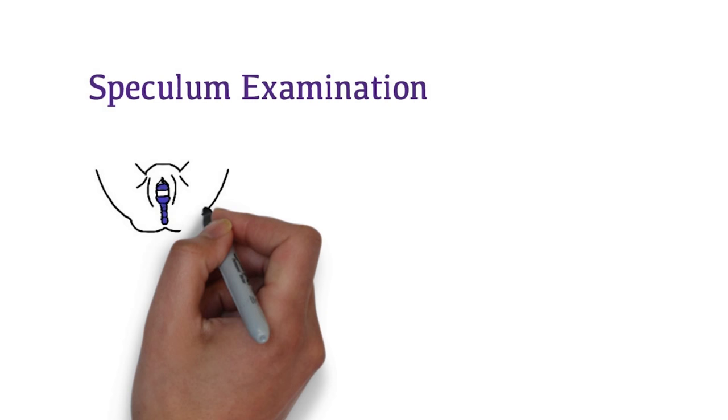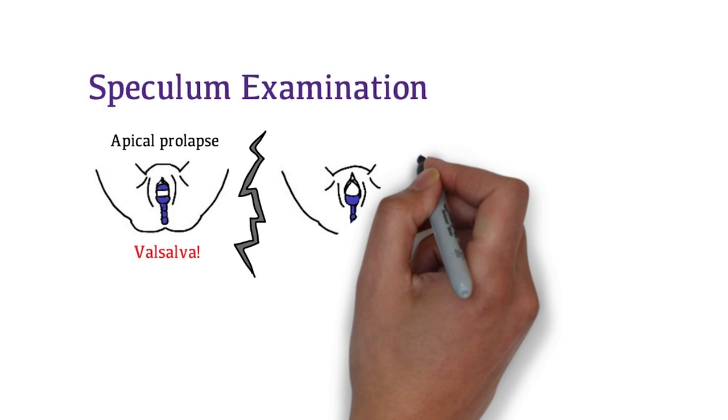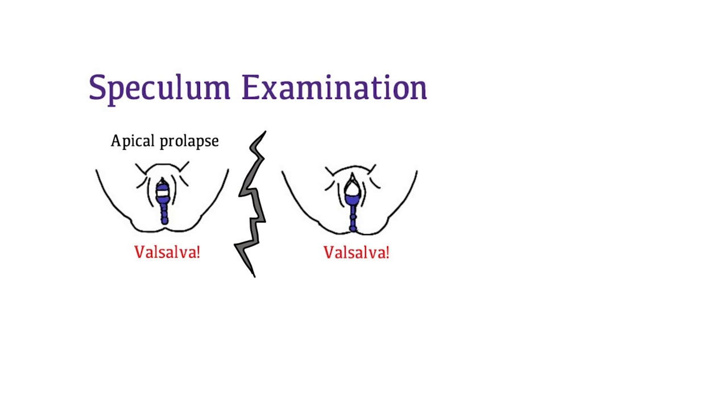We will continue with the speculum examination. Place the speculum into the vagina and ask the patient to strain. Slowly withdraw the speculum looking for uterine prolapse. Then split the speculum and displace the posterior vaginal wall to visualize the anterior vaginal wall. Ask the patient to strain and then observe for cystocele.